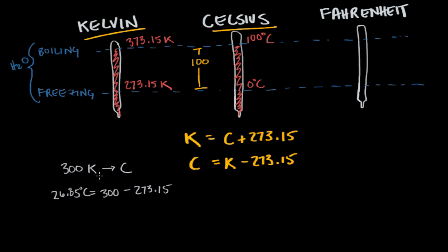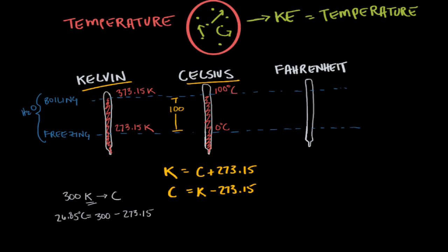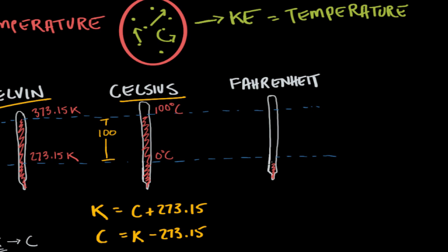Converting between Celsius and Fahrenheit is a little more complicated. In Fahrenheit, water freezes at 32 degrees and boils at 212 degrees, giving a span of 180 degree units between those points. So we need to consider two adjustments: one for degree size, since the same temperature span is 100 units in Celsius but 180 in Fahrenheit, and one for the two different zero points.